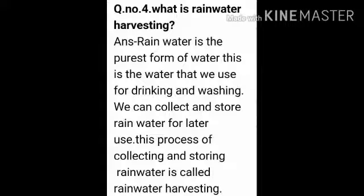Question 4: What is rain water harvesting? Answer: Rain water is the purest form of water. This is the water that we use for drinking and washing. We can collect and store rain water for later use. This process of collecting and storing rain water is called rain water harvesting.